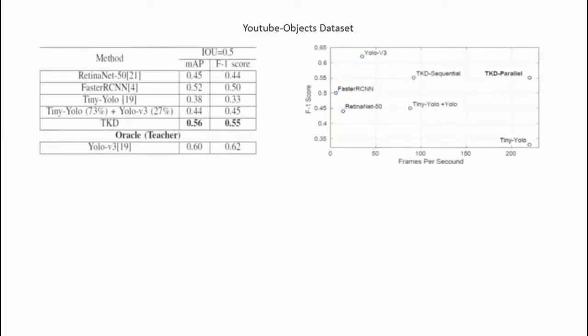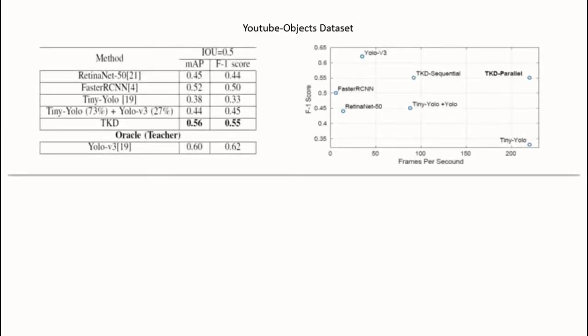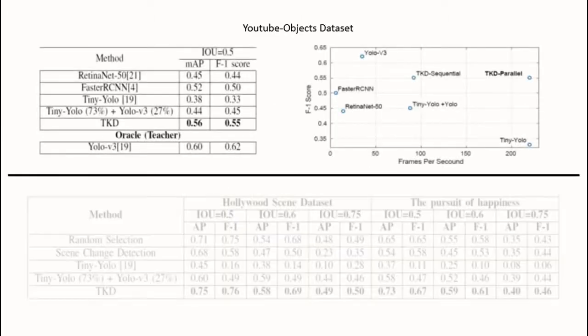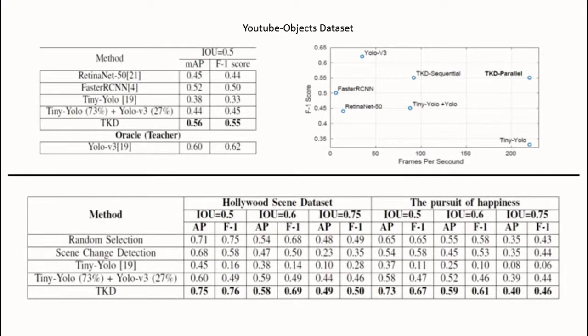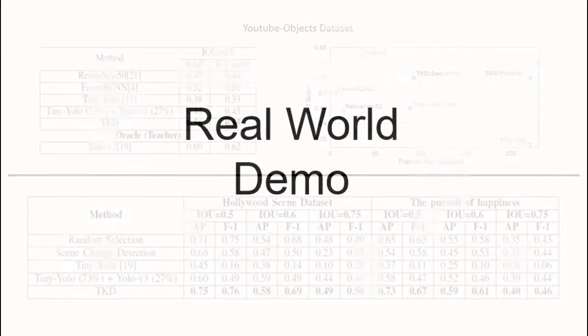Here we have the experiment results. We test and evaluate our model on the YouTube Object Dataset, the Hollywood Scene Dataset, and another movie. We have reached 220 frames per second while maintaining high precision.